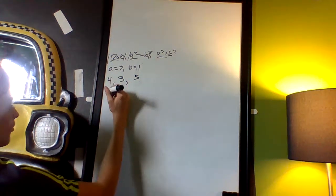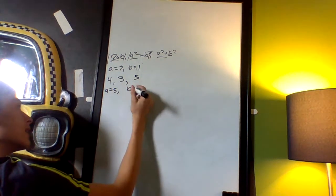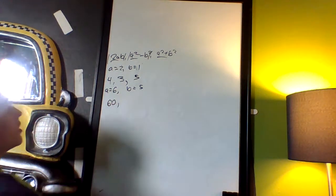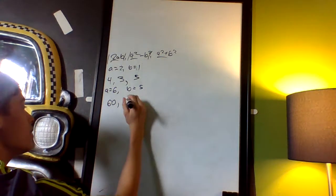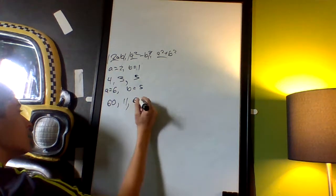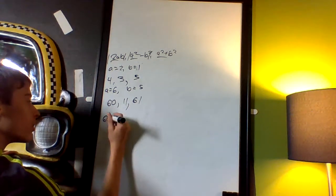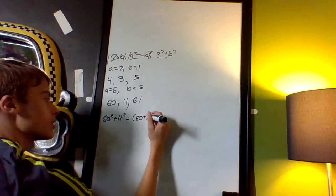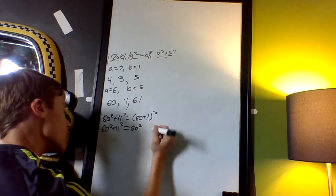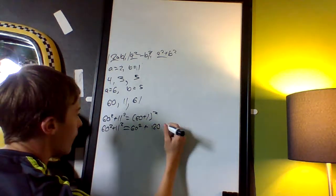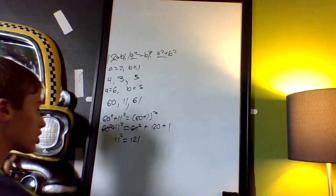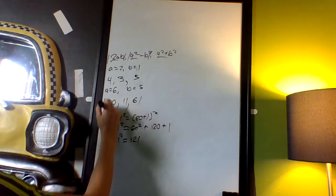What about a equals 6 and b equals 5? Then I get 2 times 6 times 5 equals 60; 6 squared minus 5 squared is 36 minus 25 equals 11; and 36 plus 25 equals 61. Let's check: 60 squared plus 11 squared equals 61 squared, which means 11 squared equals 121 — which is true. So 60, 11, 61 is also a Pythagorean triple.